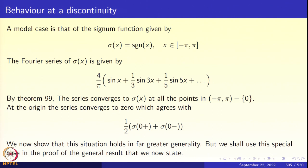Now we discuss behavior at a point of discontinuity. A model case is a function with one discontinuity at the origin. Take the signum function σ(x) = 1 if x > 0, −1 if x < 0, extended as a 2π-periodic function — its graph is a square wave train. The Fourier series for σ(x): since it is odd, all cosine terms vanish and a₀ = 0, leaving only the sine series: σ(x) = (4/π)[sin(x) + (1/3)sin(3x) + (1/5)sin(5x) + ...].